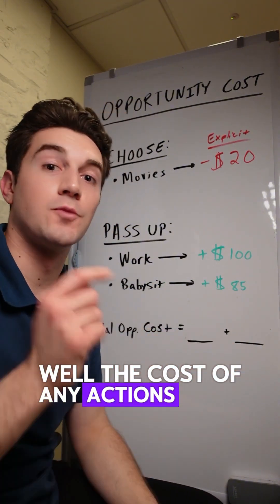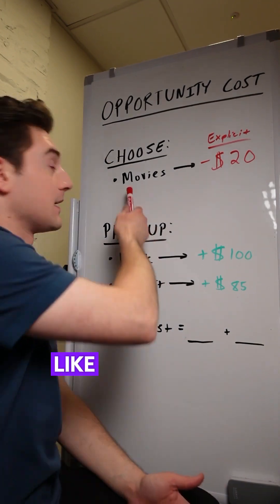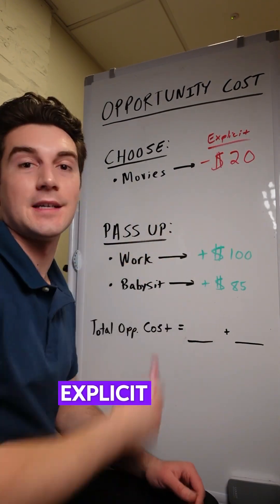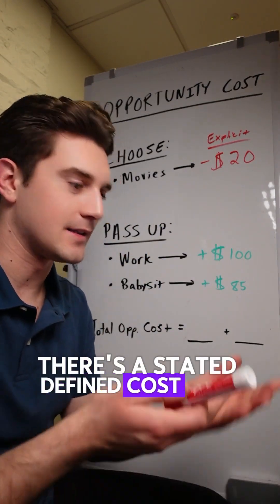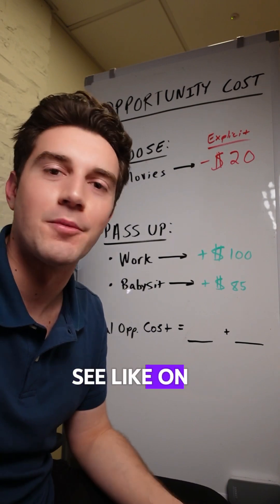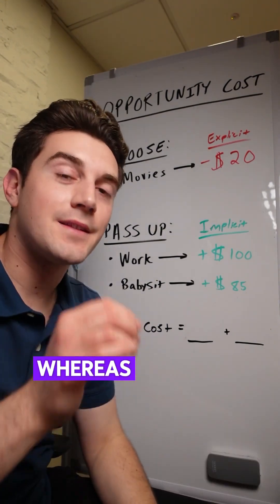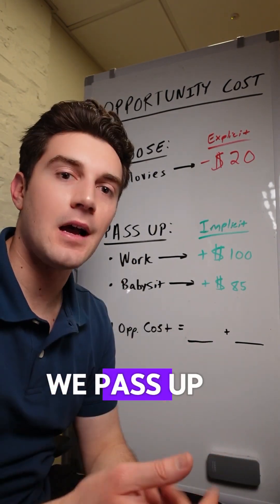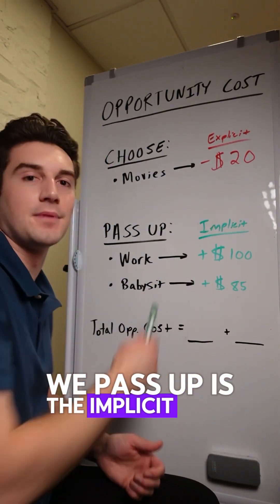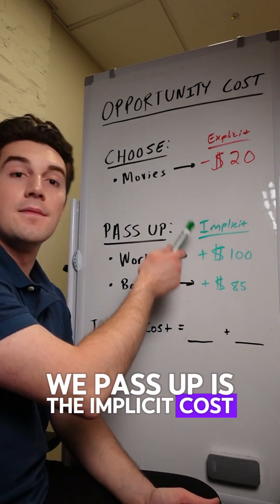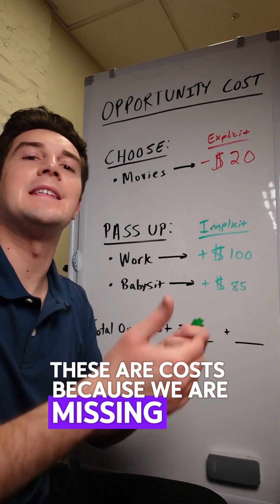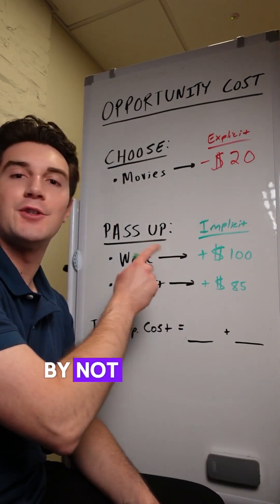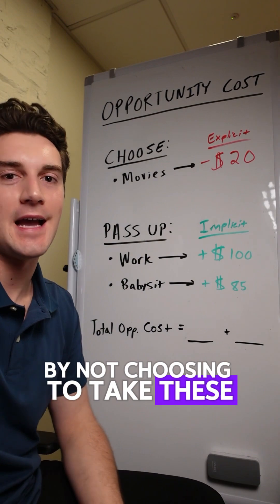The cost of any actions we're choosing to take — like in this case, go to the movies — are explicit costs. There's a stated, defined cost that we can see, like on a receipt. Whereas the value of the next best alternative we pass up is the implicit cost. These are costs because we are missing out on making money by not choosing to take these actions.